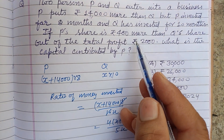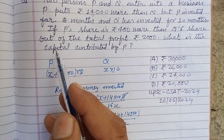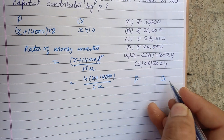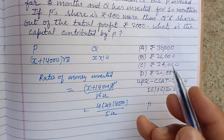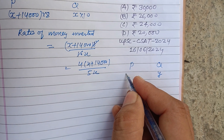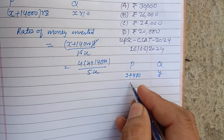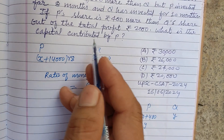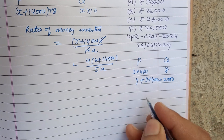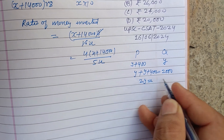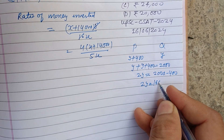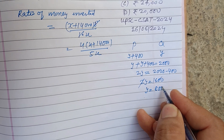Now, P's share is 400 more than Q's share out of the total profit of 2,000. Let Q's share be y, then P's share is y + 400. So y + (y + 400) = 2,000, giving 2y = 1,600, therefore y = 800.